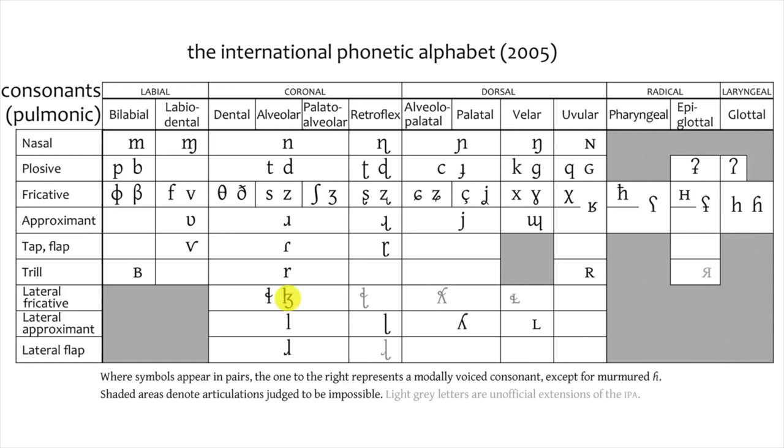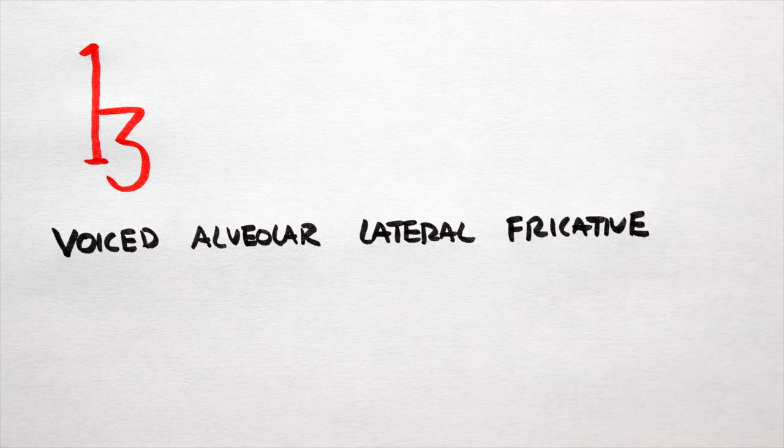So let's take this symbol. It's on the right, so it's voiced. Its place of articulation is alveolar, and its manner of articulation is lateral fricative. So this sound's technical name is a voiced alveolar lateral fricative.